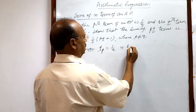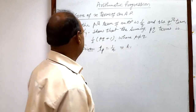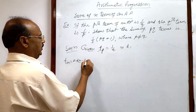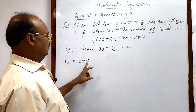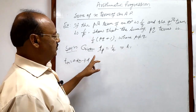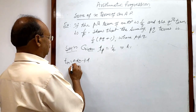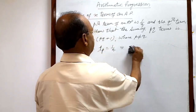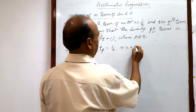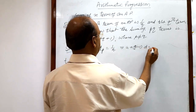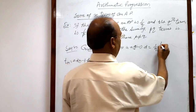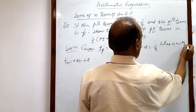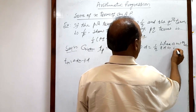We use the formula: t_n = a + (n − 1)d, where a is the first term and d is the common difference. So in place of t_p, we write a + (p − 1)d. Therefore: a + (p − 1)d = 1/q, where a is the first term and d is the common difference. ... (equation 1)